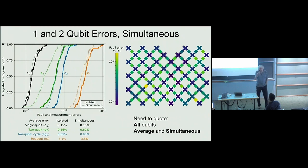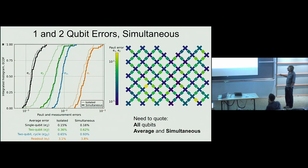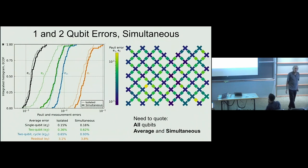The two-qubit error is about twice the single-qubit error, as expected since there are two qubits involved. But when we run all pairs simultaneously across the chip, the error is noticeably higher — telling you there's crosstalk. That's a sign there are problems you have to fix. It's hard to fix, but this measurement tells you exactly what needs to be addressed.